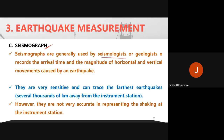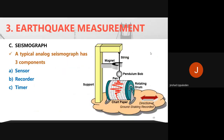A simple analog seismograph has three components: a sensor, a recorder, and a timer. The basic principle is illustrated with a simple analog design — though modern seismographs are digital, this figure helps explain the fundamental components.